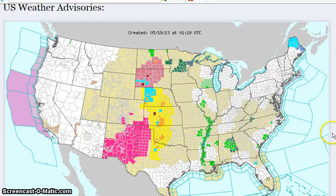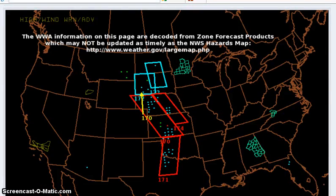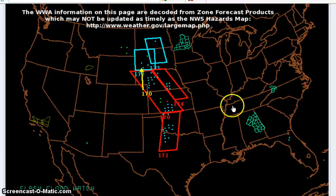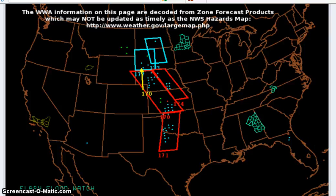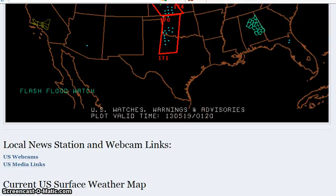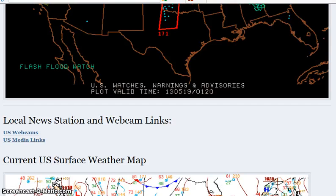We'll scroll down — this is the hazard zones, and you can go to this website here if you want to look it up yourself, or I'll put the link in the description box. See, these are all for the 19th — flash flood watch. Oh my god, I didn't know that was what that was for.